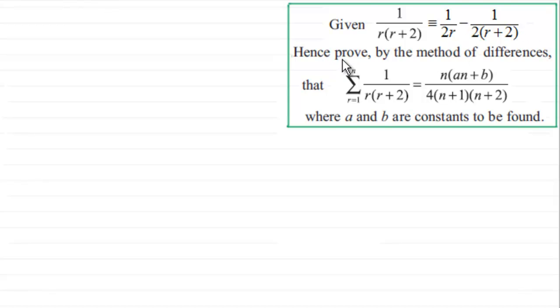And we're asked to hence prove by the method of differences that the sum from R going from 1 to N of 1 over R times R plus 2 is equal to N times A N plus B all divided by 4 times N plus 1 times N plus 2, where A and B are constants to be found.